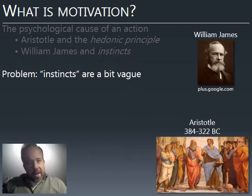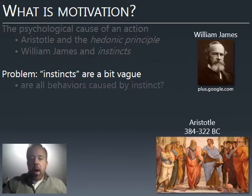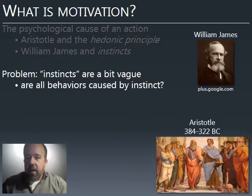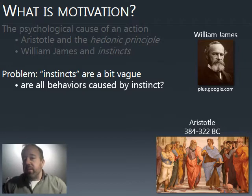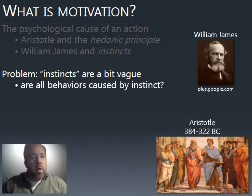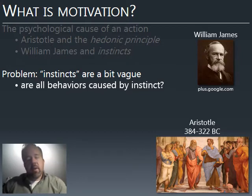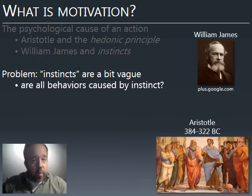That was a good start, but the trouble is that instincts were a bit vague, and the problem was trying to explain all of behavior as resulting from instinct. James and his colleagues, in trying to explain all of human behavior, came up with a list of thousands of instincts — and that's not a very parsimonious theory. Trying to explain all of behavior in terms of instincts wasn't a very good framework if you need thousands of them.